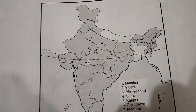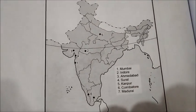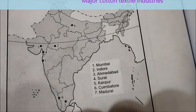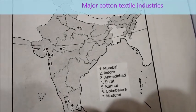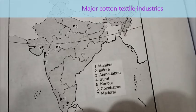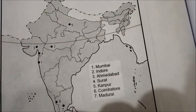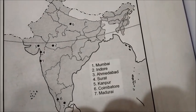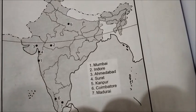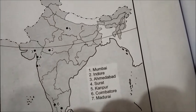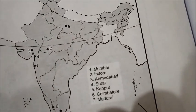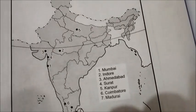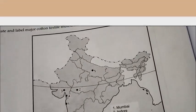Now the major cotton textile industries — cities you would have heard about. Mumbai in Maharashtra. Indore in Madhya Pradesh. Ahmedabad in Gujarat. Surat in Gujarat. Kanpur in Uttar Pradesh. Coimbatore and Madurai are both in Tamil Nadu. These are the cities where cotton textile industries flourish.